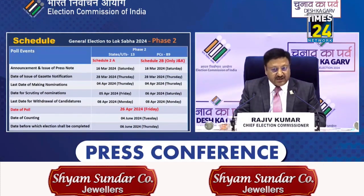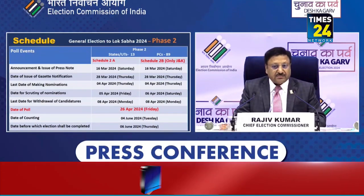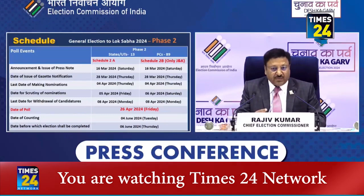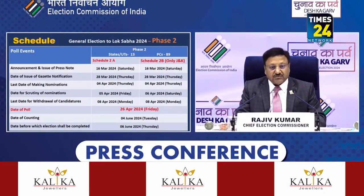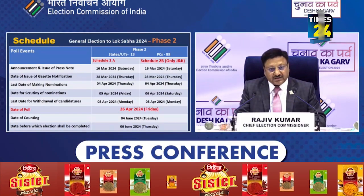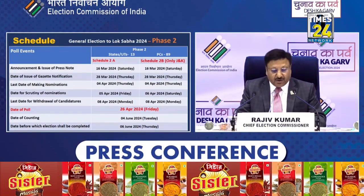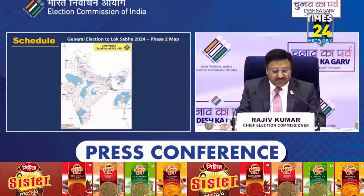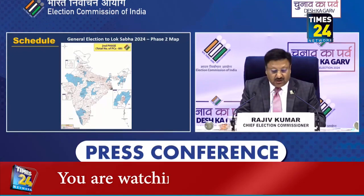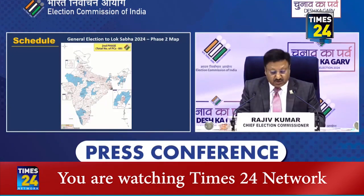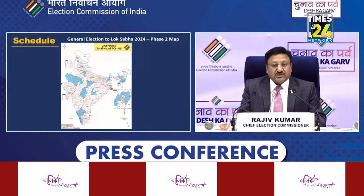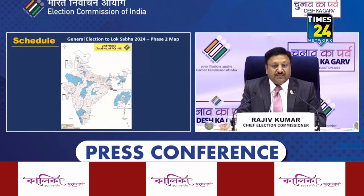In case of J&K, because of some holiday, the date of one day would be different. The date of scrutiny of nomination would be different, but the date of gazette notification or date of poll would be common. Phase 1. Phase 1 states will go to polling, and in Phase 2, more states will join. So, this is the map which would be Phase 2.